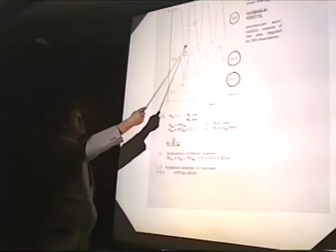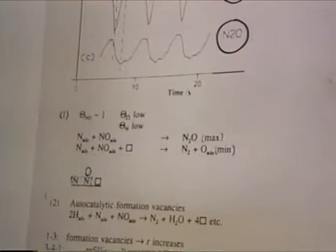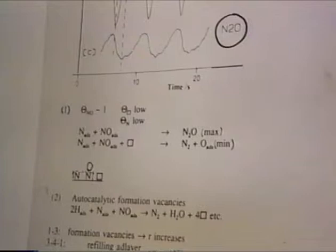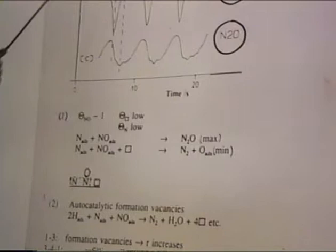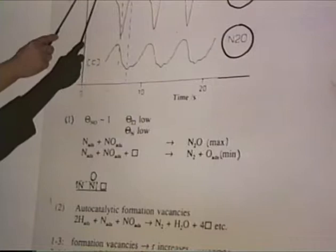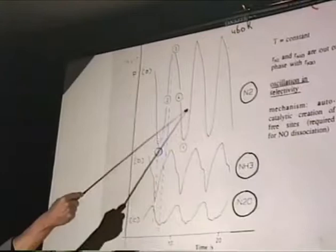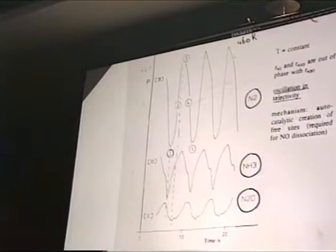The reaction rate increases and increases, the concentration of vacancies increases, the reaction rate becomes larger and larger, and then it comes to the maximum. Because the rate of NO adsorption becomes lower than the rate of reaction, and there is an inhibition effect of oxygen — a little oxygen builds up and inhibits the dissociation of NO. The reaction rate decreases, molecularly adsorbed NO builds up, the oxygen is removed by reaction with hydrogen, and it starts all over again.